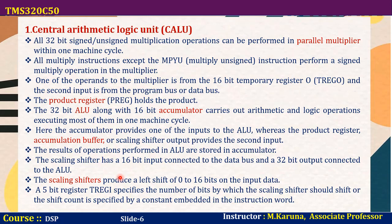The scaling shifter has a 16-bit input connected to the data bus and a 32-bit output connected to the ALU. The scaling shifter produces a left shift of 0 to 16 bits on the input data. The 5-bit temporary register one (T-register 1) specifies the number of bits by which the scaling shifter should shift, or the shift count is specified by a constant embedded in the instruction word, indicating how many times to shift for the scaling operation.